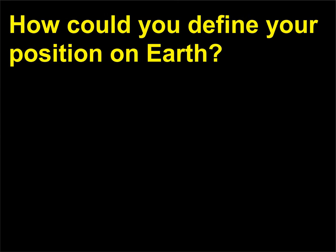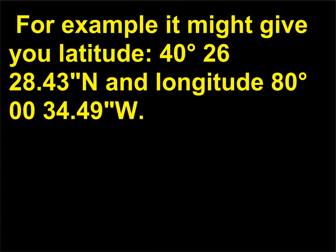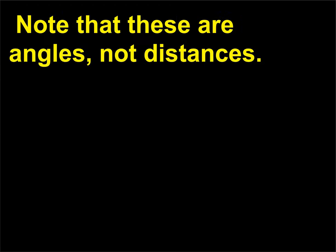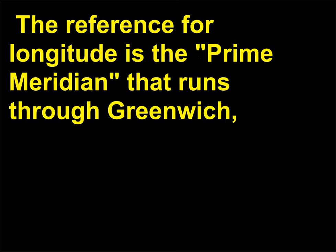How could you define your position on Earth? If you use a GPS device, you might find that your location is given as a latitude and longitude. For example it might give you latitude 40 degrees 26 minutes 28.43 seconds N and longitude 80 degrees 00 minutes 34.49 seconds W. Note that these are angles, not distances. The reference for latitude is Earth's equator. The reference for longitude is the prime meridian that runs through Greenwich, England, a suburb of London.